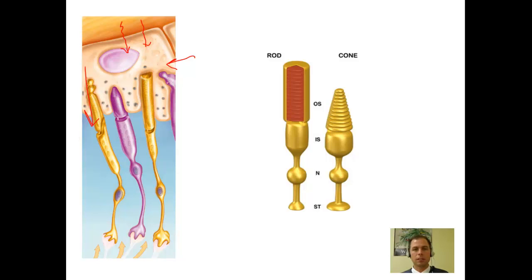Structurally, you can see that there's a different shape in what we refer to as the outer segment, or the OS shown here in our diagram, of each cell type. That's really where the name comes from: a conical outer segment for our cones, a rod-like outer segment for our rods. So the shape is really what defines them by name. They have very similar other parts.